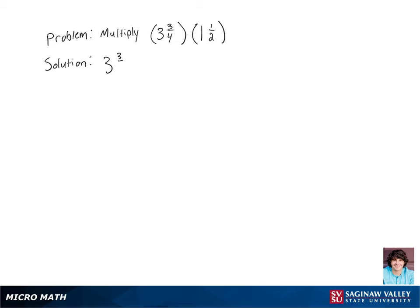Let's multiply 3 and 3/4 by 1 and 1/2. So the first thing we're going to want to do is rewrite our mixed numbers as fractions. 3 and 3/4 can be rewritten as 15/4, and 1 and 1/2 can be rewritten as 3/2.